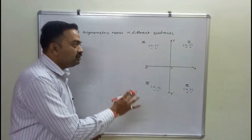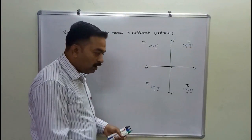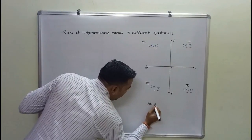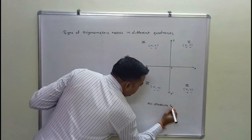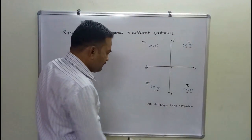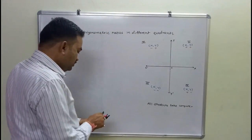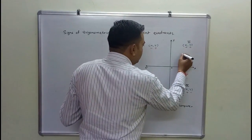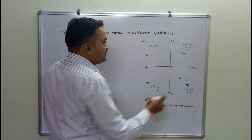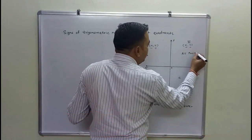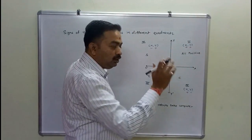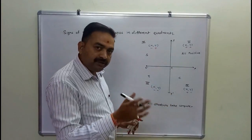Now, in which quadrant is which trigonometric ratio positive or negative? A useful mnemonic is: All Students Take Computer — meaning in the first quadrant All ratios are positive, in the second quadrant Sine (and cosec) are positive, in the third quadrant Tan (and cot) are positive, and in the fourth quadrant Cos (and sec) are positive.